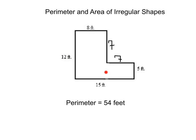Now that we've found our missing lengths, the perimeter is easy. We just need to add all of our sides around the shape. That's 15 plus 12 plus 8 plus 7 plus 7 plus 5, giving us a perimeter of 54 feet.